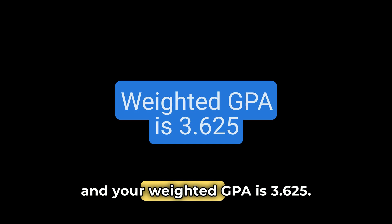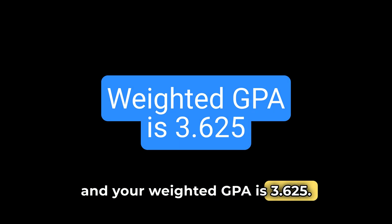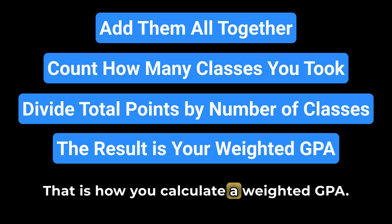Divide that by the four classes, and your weighted GPA is 3.625. That is how you calculate a weighted GPA.